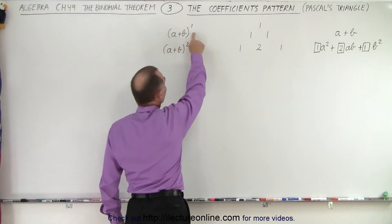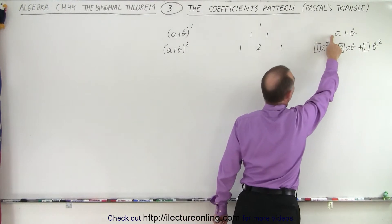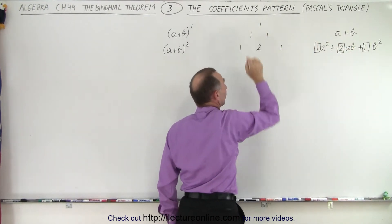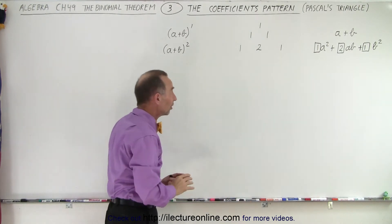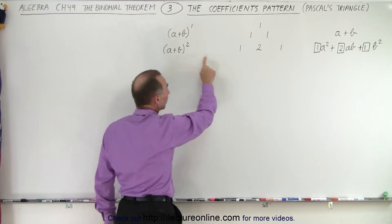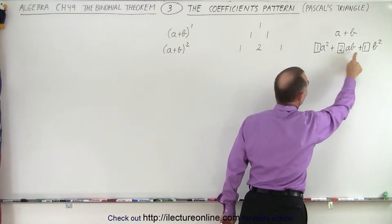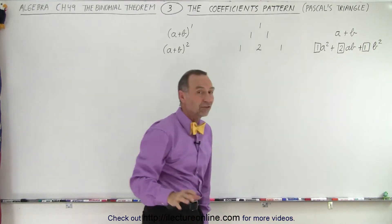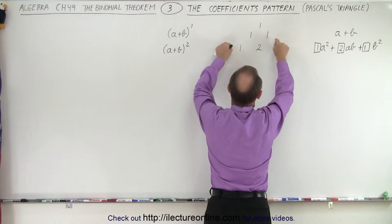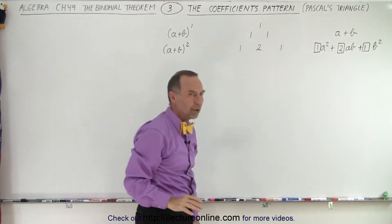Well, for a plus b to the first power, we simply have a plus b, and the coefficients in front of a and b are simply equal to 1, so you have a 1 and a 1 there. I just put a 1 at the very top just to get us started. When we get a plus b squared, we end up with a 1, a 2, and a 1. That's because we have 1a squared plus 2ab plus 1b squared. Now there's an interesting pattern. Notice we took the two ones and moved them out here, then we added these two together, and we end up with a 2.